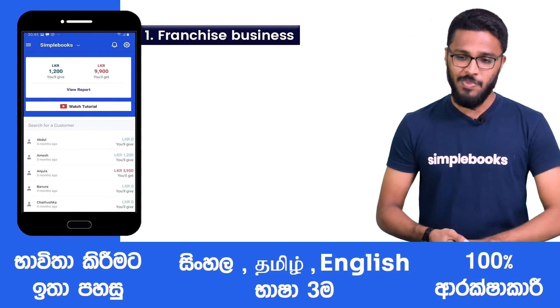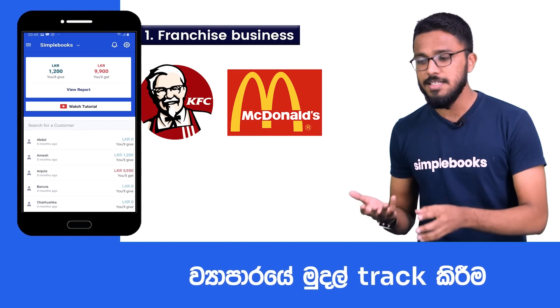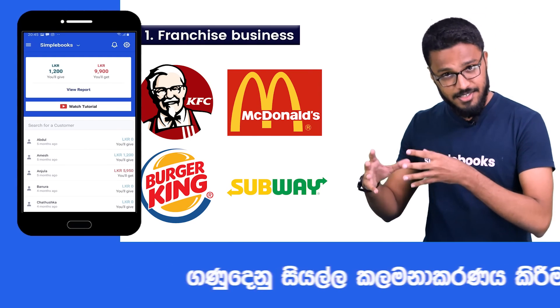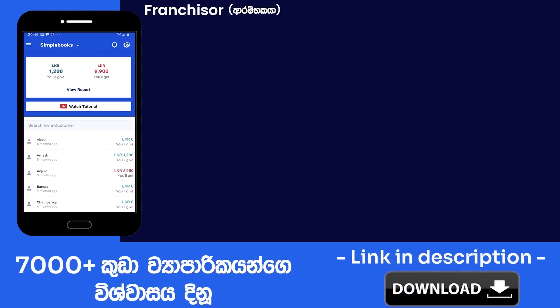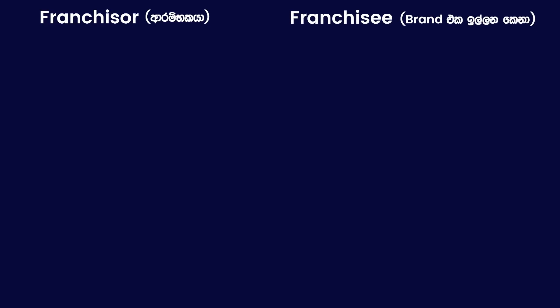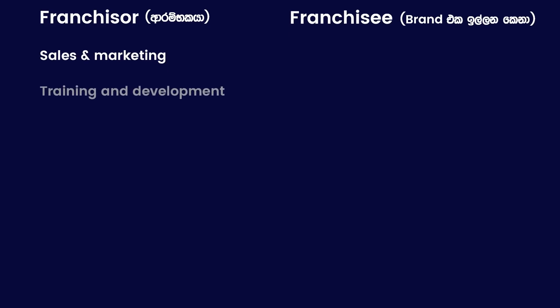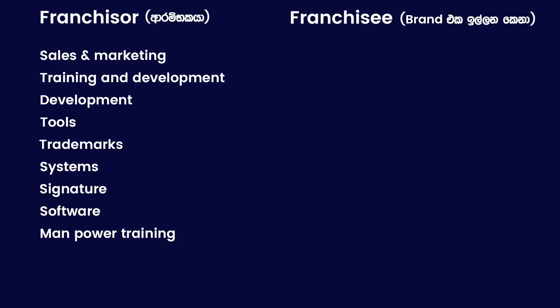Here — the franchise business model. There come KFC, McDonald's, Burger King, Subway. They have a franchise model. They use the franchise brand — a company-sponsored IT franchise. In the franchise, the franchisor provides: sales marketing, training development, development tools, trademark, system, signature, software, manpower training, corporate strategy, and branding support. This is the franchise package.